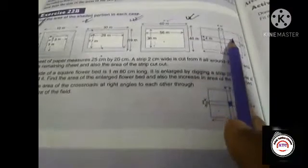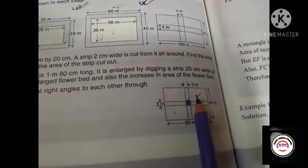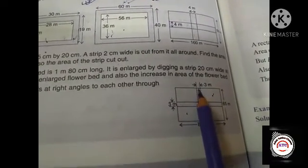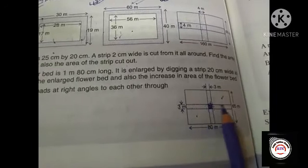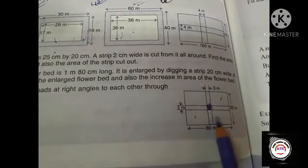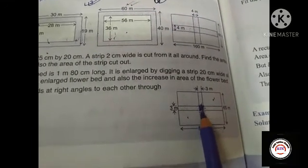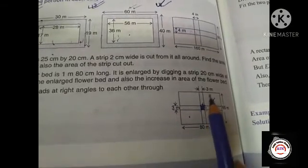Number 7 is the same as number 1 — we have to find out the area of the shaded portion. We find the area of one region, then the other region, sum these two areas, and subtract the overlapping area. Number 8: the figure has dimensions to work with.